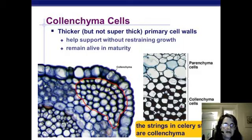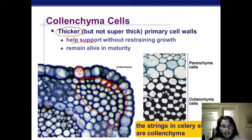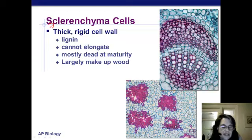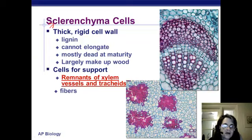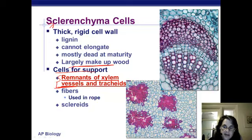Parenchyma is general plant tissue with many functions including storage and photosynthesis; cells are usually thin-walled and carry out important metabolic activities. Collenchyma cells have thicker cell walls and help support the plant but can stretch and don't restrain growth, implying flexibility. Sclerenchyma cells are thick-walled and rigid — mostly dead at maturity. They are heavily hardened and provide support; they make up wood in a tree trunk, formed from the remnants of vessel elements and tracheids.